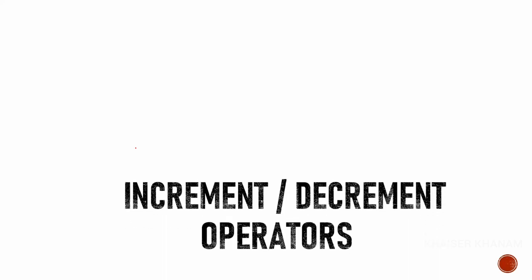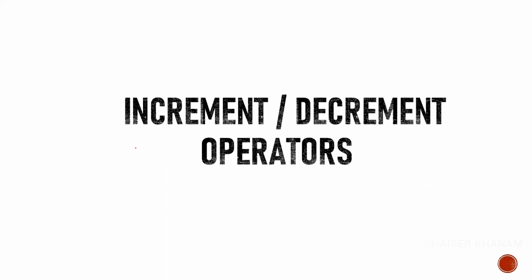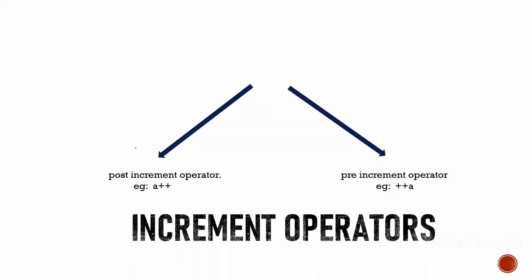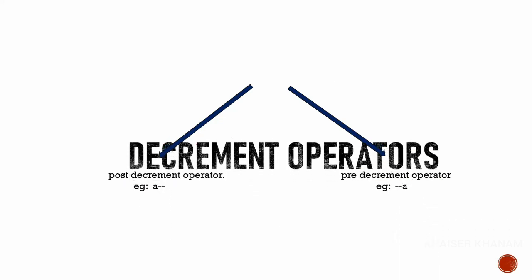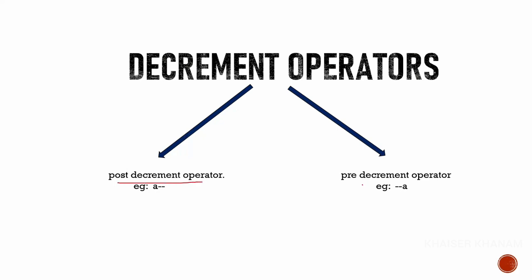We also have increment and decrement operators. Inside the increment operator we have post-increment and pre-increment. Similarly for the decrement operator we have post-decrement and pre-decrement. We are going to see examples of each operator one by one and understand where they are used.